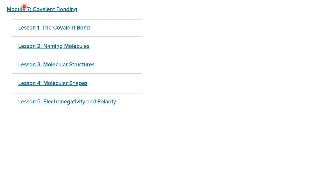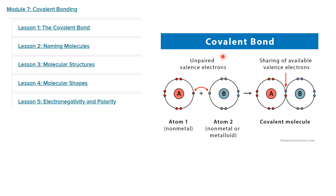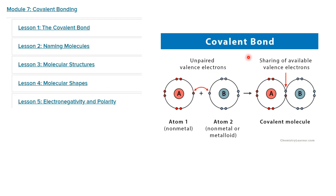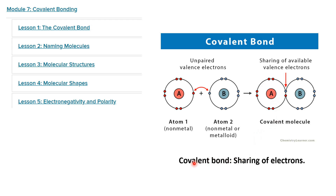After that we went to study another type of bonding — covalent bonding, in module 7. We focused on the covalent bond. If you remember, in an ionic bond electrons are transferred from one atom to another, but in the covalent bond electrons are shared between two atoms, especially between non-metals or metalloids.